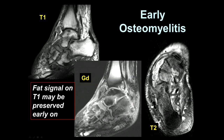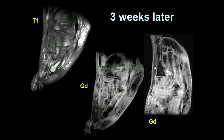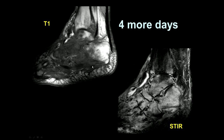Early osteomyelitis is another important concept. We've been taught that the T1 marrow signal is replaced in the setting of osteomyelitis, but that's not necessarily true in early infections. The fat takes time to metabolize inside the bone, so if you catch an infection very early on, the fat signal may not be completely replaced yet. We see an area of edema at the hind foot and mid foot, enhancement, but the T1 signal is not completely replaced. This patient was not a surgical candidate and was treated medically and followed up. Three weeks later, we're starting to get replacement of the T1 signal completely, more compatible with osteomyelitis. Four days after that, you can see classic osteomyelitis with involvement of the mid foot and hind foot.